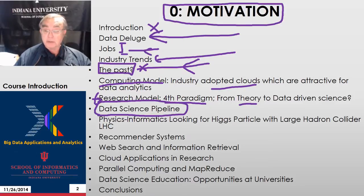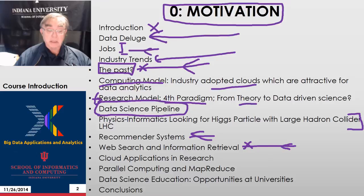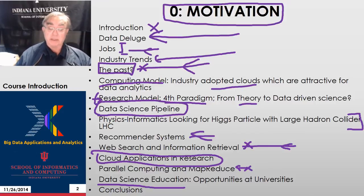Then we go through some of the topics discussed in more detail in this class. We have a few slides on the physics informatics of looking for the Higgs boson with the Large Hadron Collider at CERN Geneva. Then we look at recommender systems and their implications for algorithms, web search and information retrieval, how research uses clouds, parallel computing and MapReduce and how they match together nicely, and some comments on the methodology of this course — namely data science education and its opportunities at universities — and then we have conclusions.